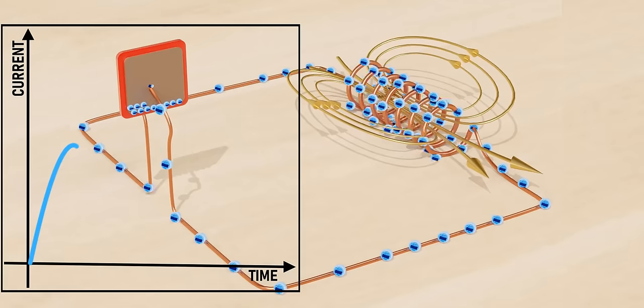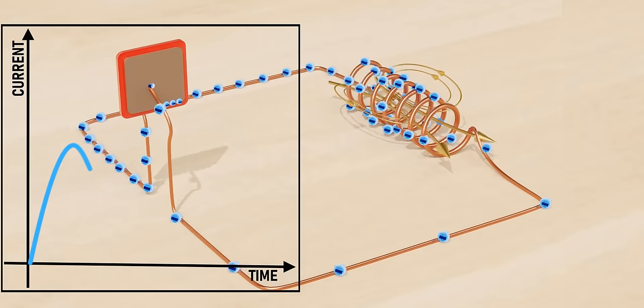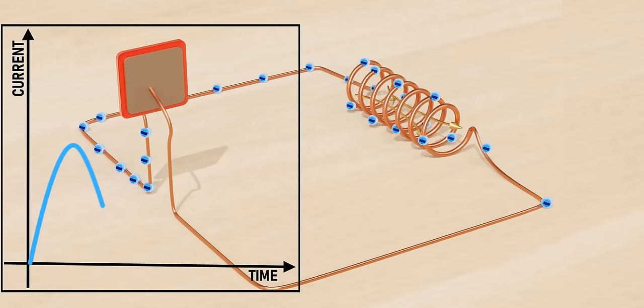In an inductor-capacitor circuit, the current flow variation has to be gradual. Here we can see that the current flow in the LC circuit is shaped like a sine curve.